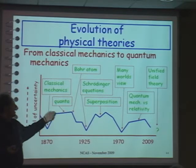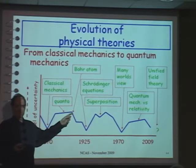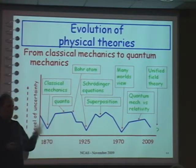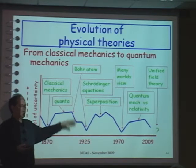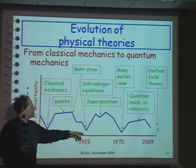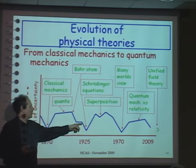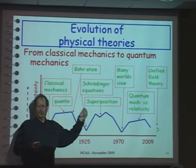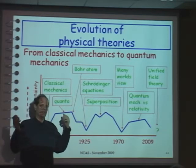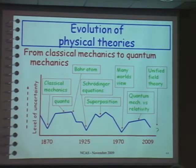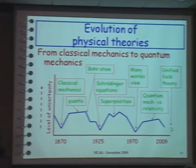Then we came up with the Bohr atom — the so-called solar system of the nucleus and the electrons circling around it — and we had a better picture of what was happening. Schrödinger's equations explained the wave-particle duality, but then you ended up with superposition, the concept that light is both a particle and a wave. And things got a little bit chaotic again.